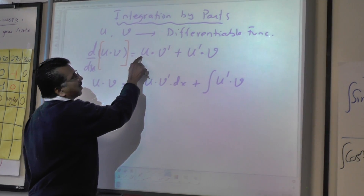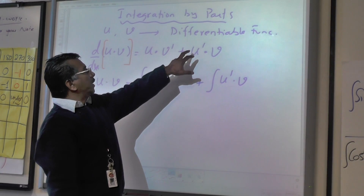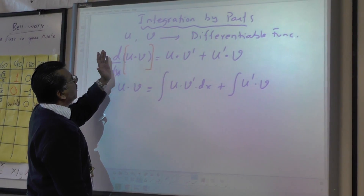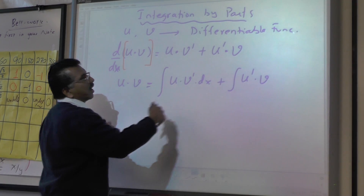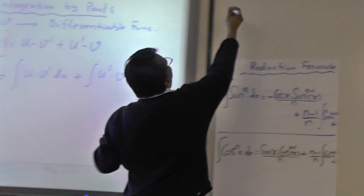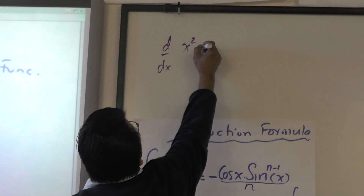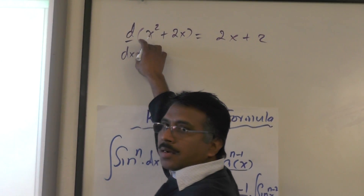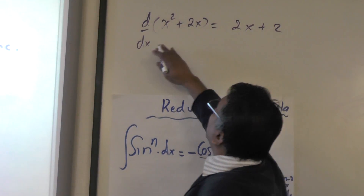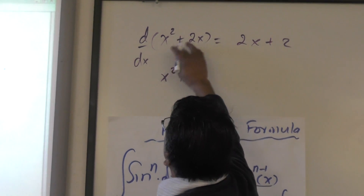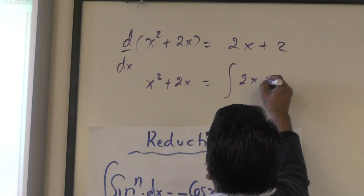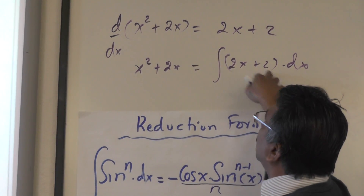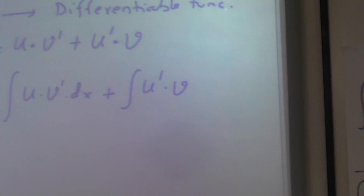Just to give an example: if I write the derivative of x² + 2x, we know it is 2x + 2 — the derivative of x² is 2x and the derivative of 2x is 2. So we can always write that x² + 2x is the integral of 2x + 2. The entire derivative is 2x + 2, and integrating gives back x² + 2x.